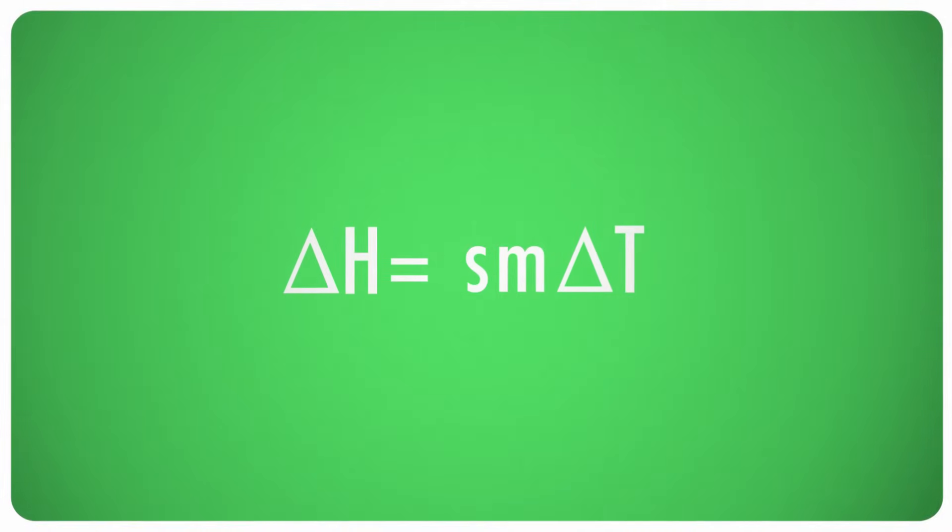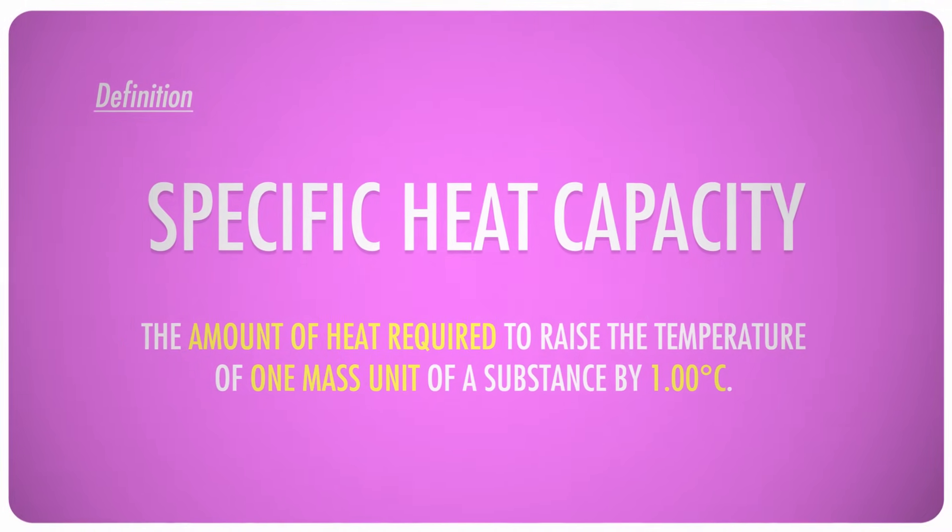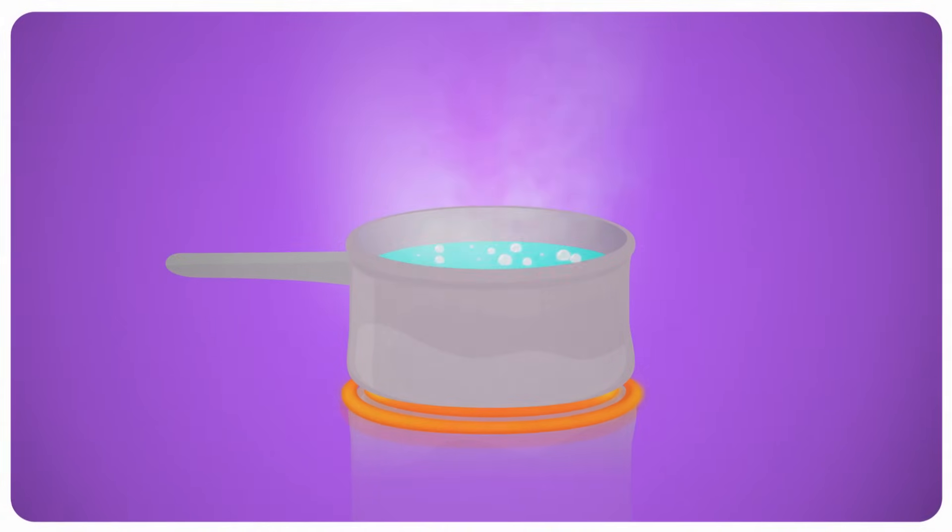Specific heat capacity, represented by a lowercase s, is the amount of heat required to raise the temperature of one mass unit, like a gram or kilogram, of a substance by one degree Celsius. So it turns out that different amounts of heat create different temperature changes, like metals get hot really easily and cool down really easily, others, like water, require a lot of thermal energy to raise the temperature, and therefore have to release a lot of heat to cool down.